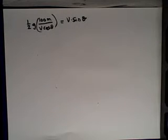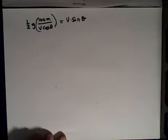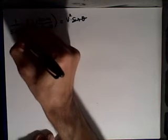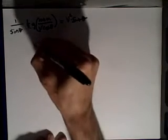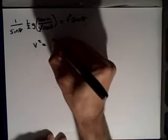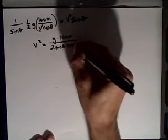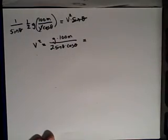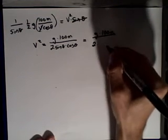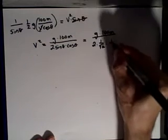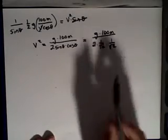Now I can solve for velocity v. I'll multiply both sides by v, getting v squared on one side, then divide both sides by sine theta. Tidying up, v squared equals g times 100 meters on top, and on the bottom, 2 times sine theta times cosine theta. For the specific case of 45 degrees: sine 45° is 1 over root 2, and cosine 45° is 1 over root 2, so 2 times these gives 2 over 2 — the denominator is just 1.